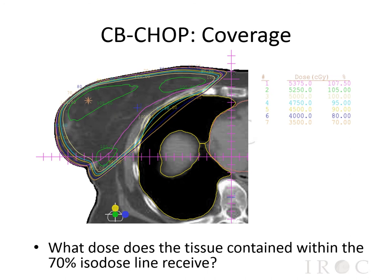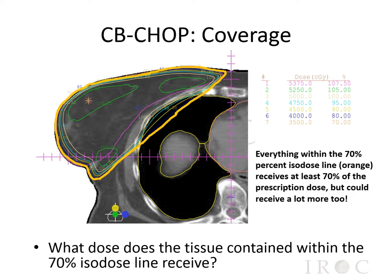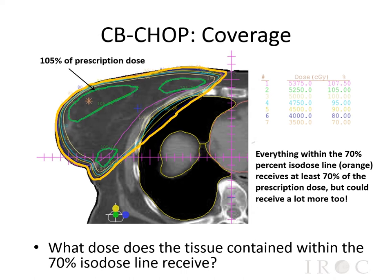To extrapolate this concept: what dose does the tissue contained within the 70% isodose line — highlighted in orange — receive? Everything within the 70% isodose line receives at least 70% of the prescription dose, but it could receive a lot more too. That's why the areas outlined in green are receiving 105% of prescription dose. All tissue within the 105% isodose line could be receiving even more than 105%, but at a minimum it receives 105% of the dose.